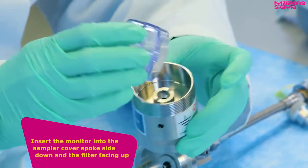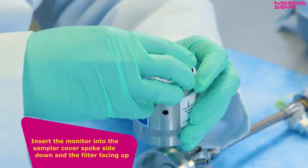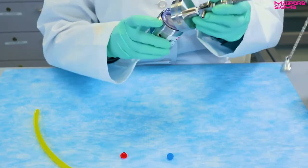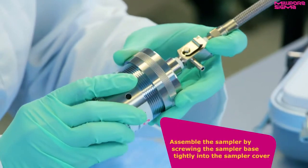Insert the monitor into the sampler cover spoke side down and the filter facing up. Assemble the sampler by screwing the sampler base tightly into the sampler cover.